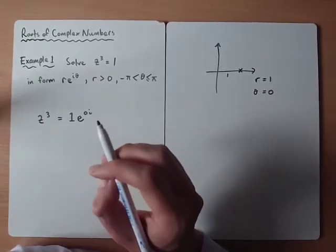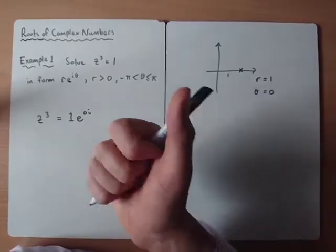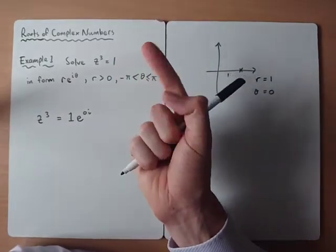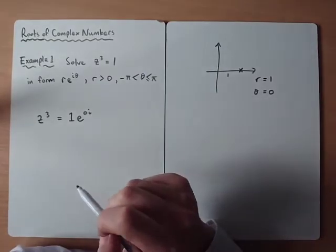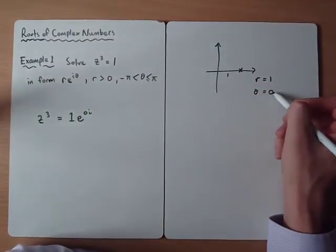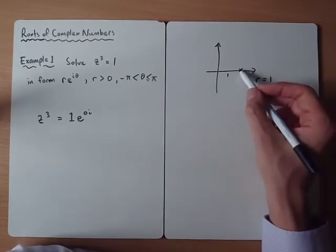And the key sort of technique in this topic is, first of all, write it in exponential form. Second of all, we need a way of figuring out the other solutions. Now if we just look at this diagram, theta equals 0 is not the only possible representation of that point there.